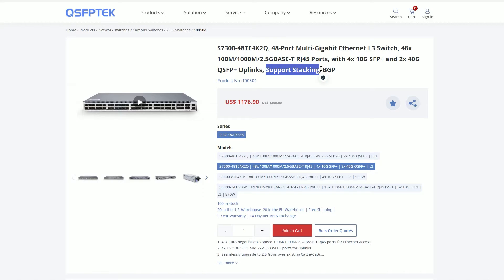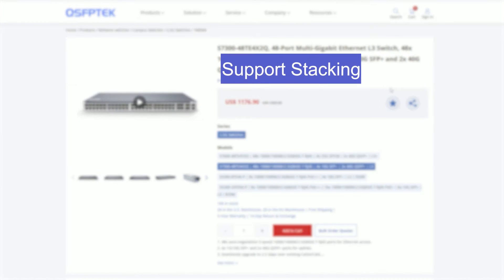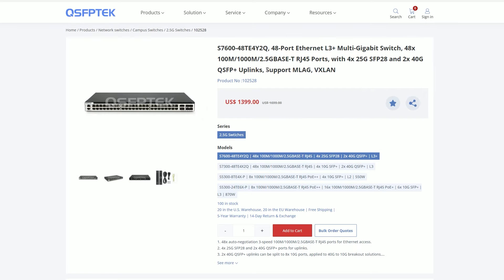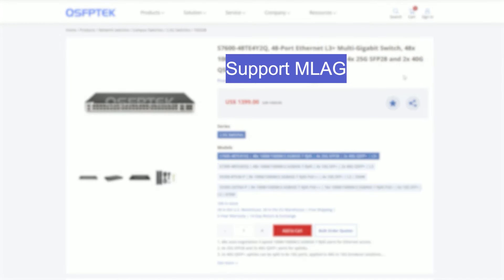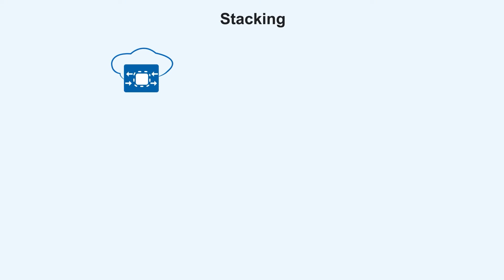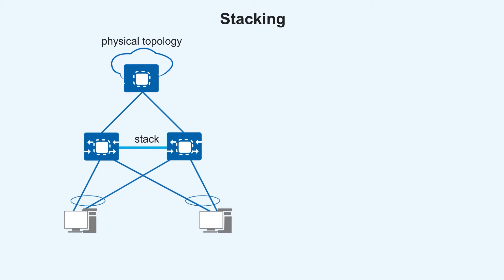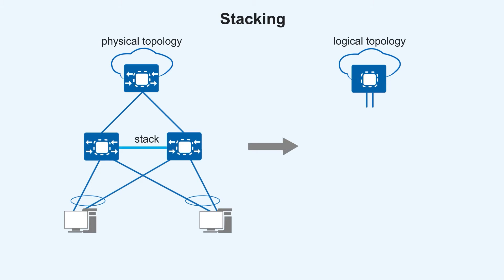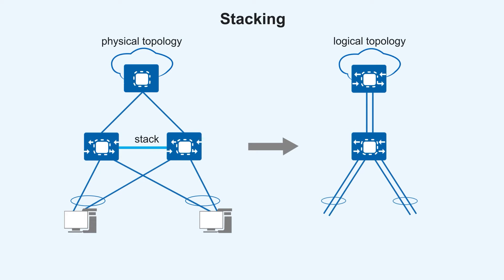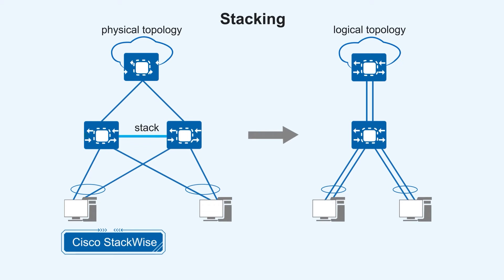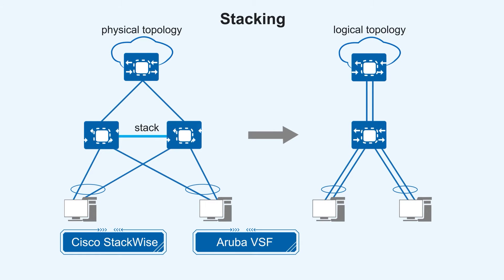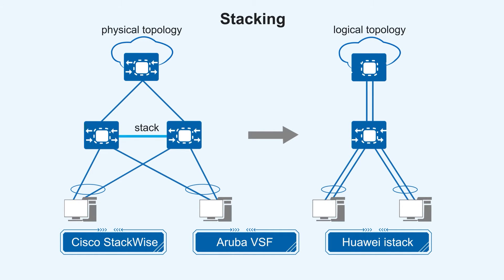When we choose a switch, we often see the words 'support stacking' or 'support MLag.' They may seem similar, but in fact they are quite different. Stacking is a network solution composed of two or more stackable switches, and switches that are part of a stack behave as one single device. Some mainstream brands have slightly different names for this function, such as Cisco StackWise, Garuba VSF, and Huawei iStack.